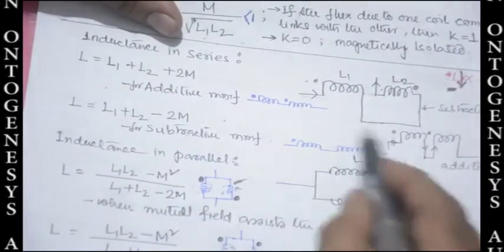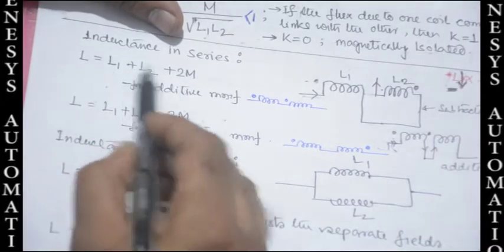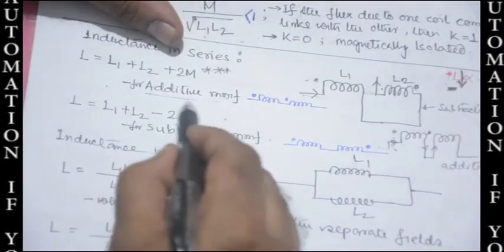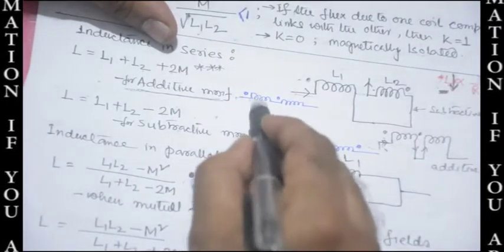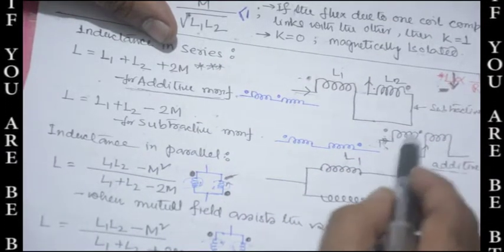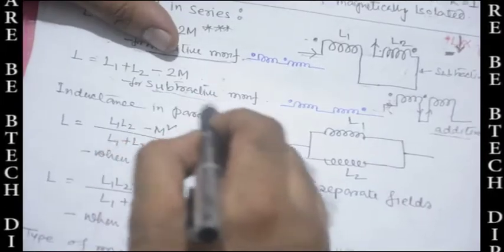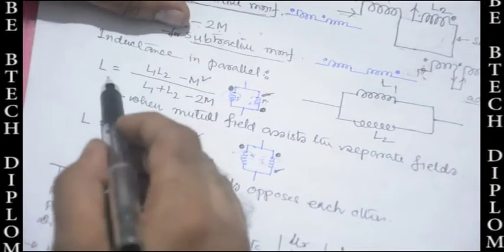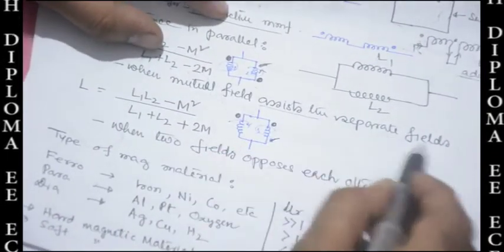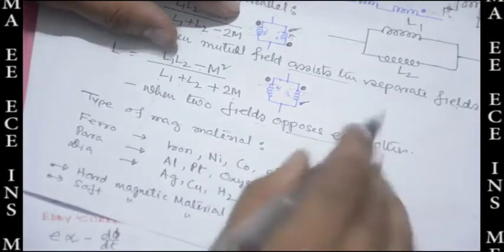Inductance in series: total inductance L = L₁ + L₂ + 2M for additive MMF (currents flowing in the same direction, fluxes adding), and L = L₁ + L₂ − 2M for subtractive mode (one flux opposes the other). Inductance in parallel: L = (L₁L₂ − M²) / (L₁ + L₂ − 2M) when the mutual field assists the separate fields, and L = (L₁L₂ − M²) / (L₁ + L₂ + 2M) when the two fields oppose each other — remember these formulas.